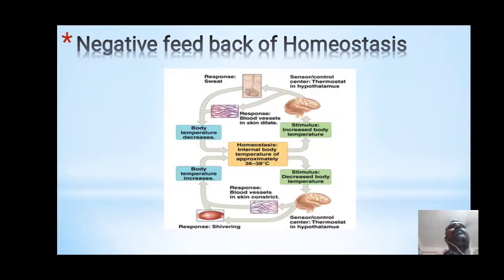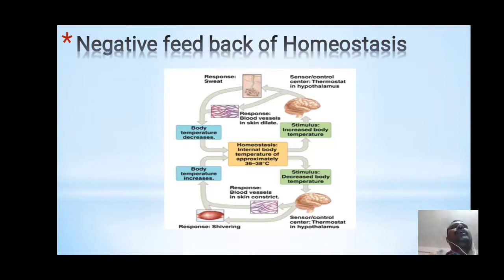The feedback mechanism of homeostasis is shown in the diagram. At the center, in the yellow background, homeostasis represents an internal body temperature of approximately 36 to 38 degrees Celsius. If the temperature increases, the stimulus shown at the upper side is sent to the brain, which signals either the sweat glands or blood vessels. The sweat glands secrete sweat, consequently reducing body temperature, and the blood vessels in the skin dilate. Consequently, body temperature decreases and homeostasis is maintained.